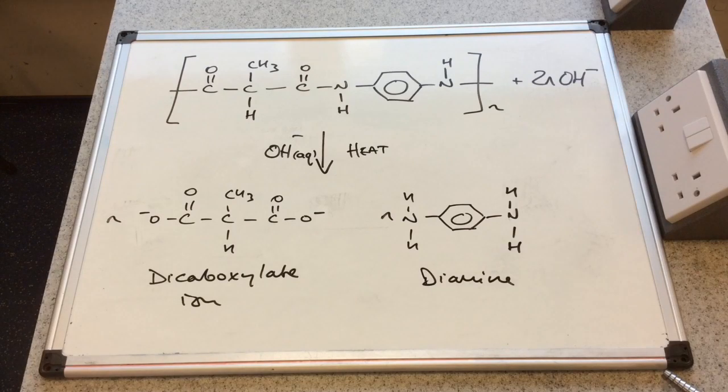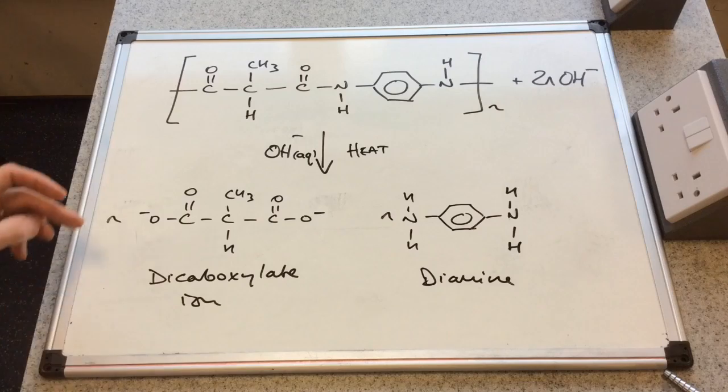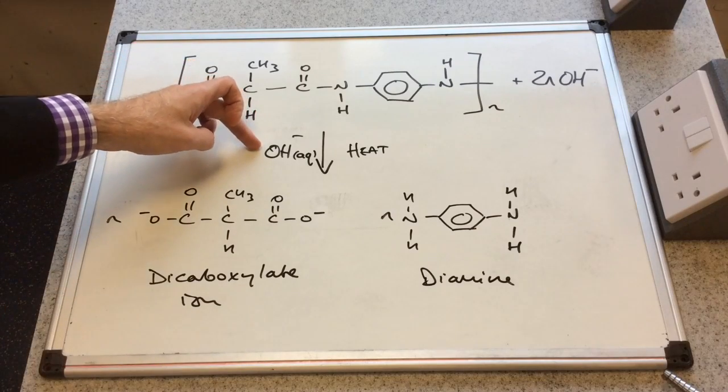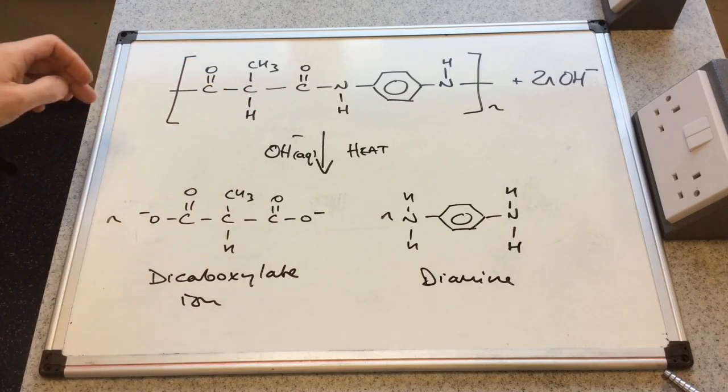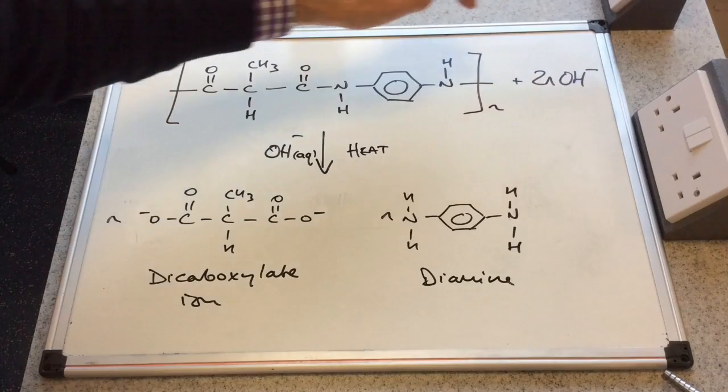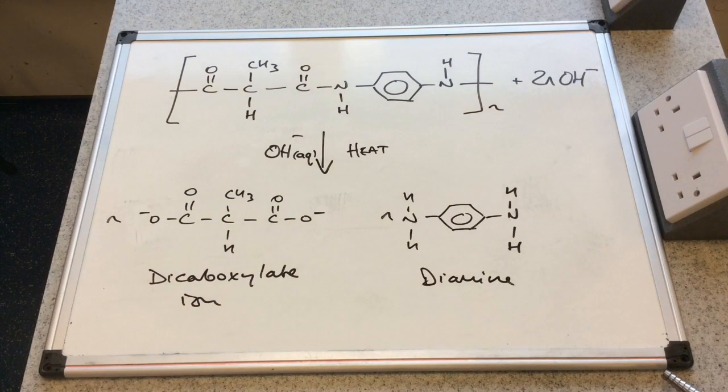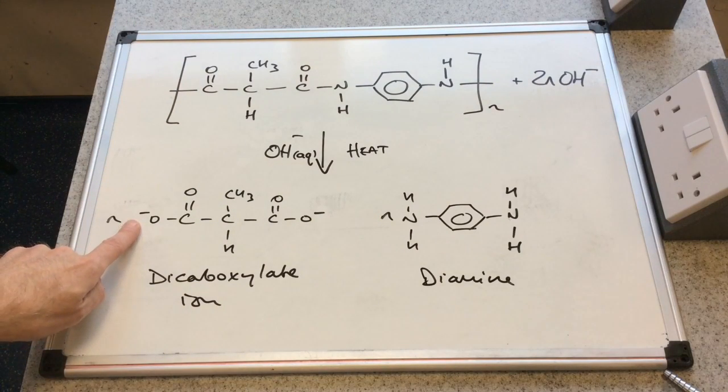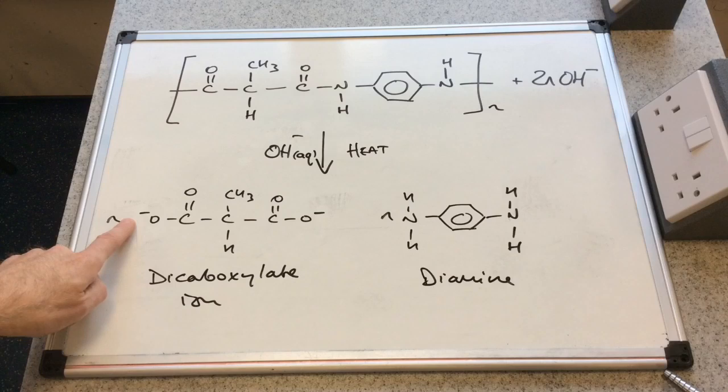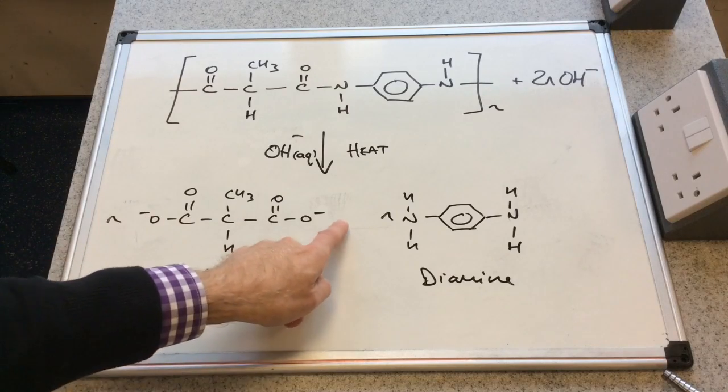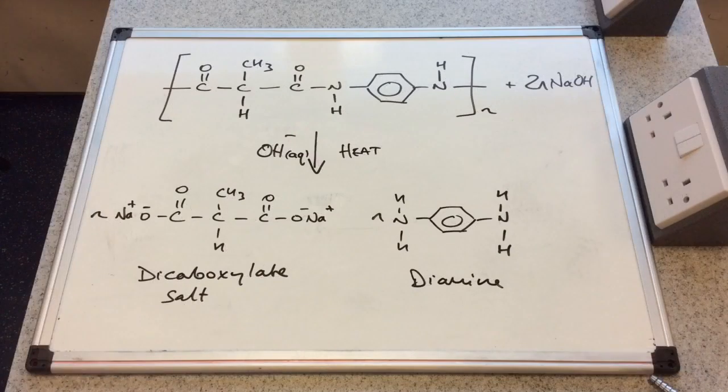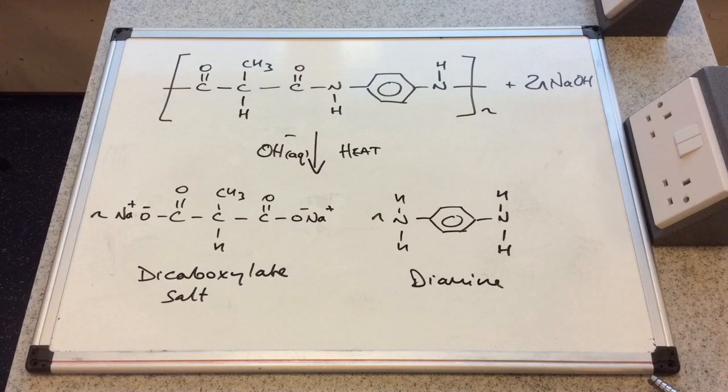And just to finish, if it was specified as being, say, sodium hydroxide, then you would have two N moles of NaOH in the equation and here you would have Na plus ions either side of the O minus. So essentially what you're making is what's called a dicarboxylate salt.